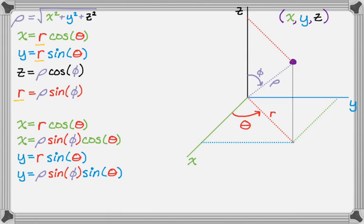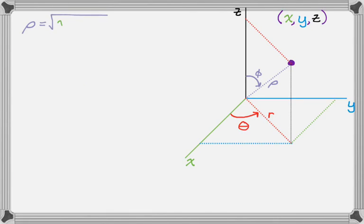So let's kind of summarize this on the next page. So we figured out that if we know x, y, and z, we can figure out that rho is the square root of x squared plus y squared plus z squared, which is the distance formula.